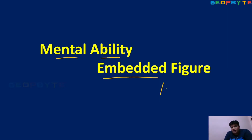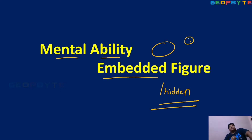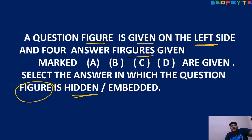The topic is embedded figures, also called hidden figures. Suppose you are in your house with your friends playing hide and seek. In the same way, one figure is hidden — one part of the diagram is hidden in the answer options. You need to observe which option satisfies the given diagram. A question figure is given on the left side, and four answer figures marked A, B, C, D are given. Select the answer in which the question figure is hidden or embedded.